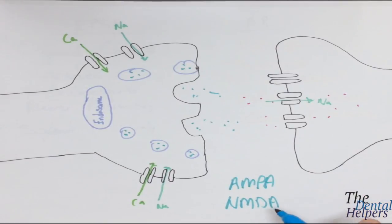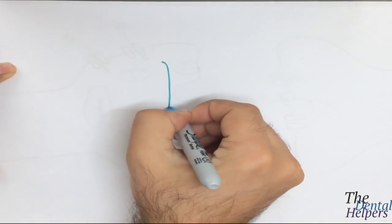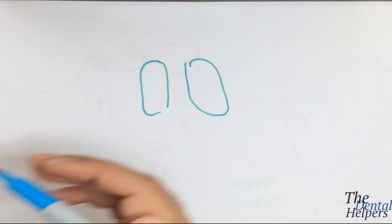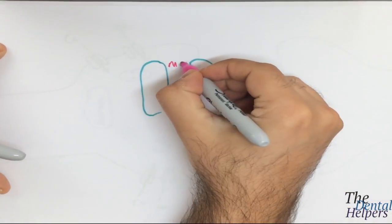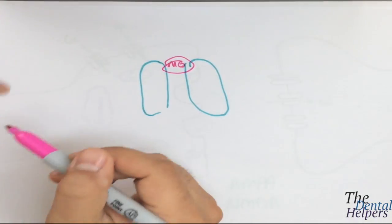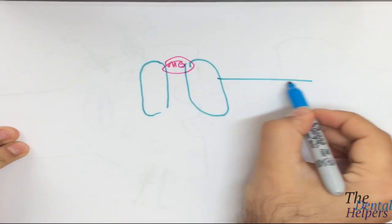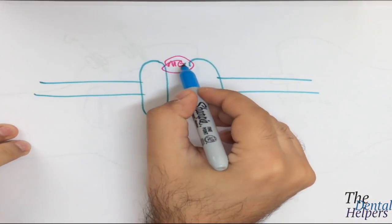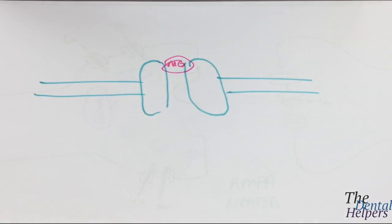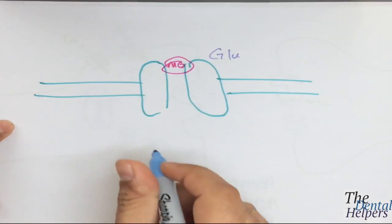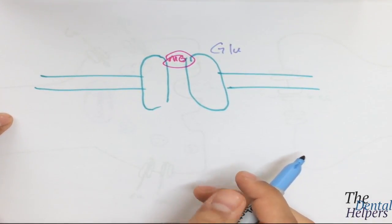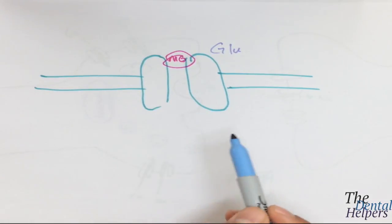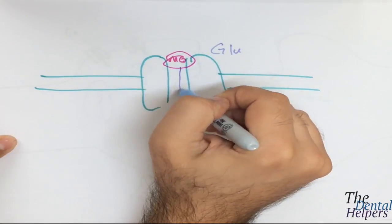The NMDA receptor, on the other hand, has magnesium in front of the receptor that basically blocks transmission through it. It is only when there is the combined action of glutamate binding onto the receptor, along with sodium and calcium binding as well, that a conformational change occurs, allowing magnesium to move out of the way and open the channel.